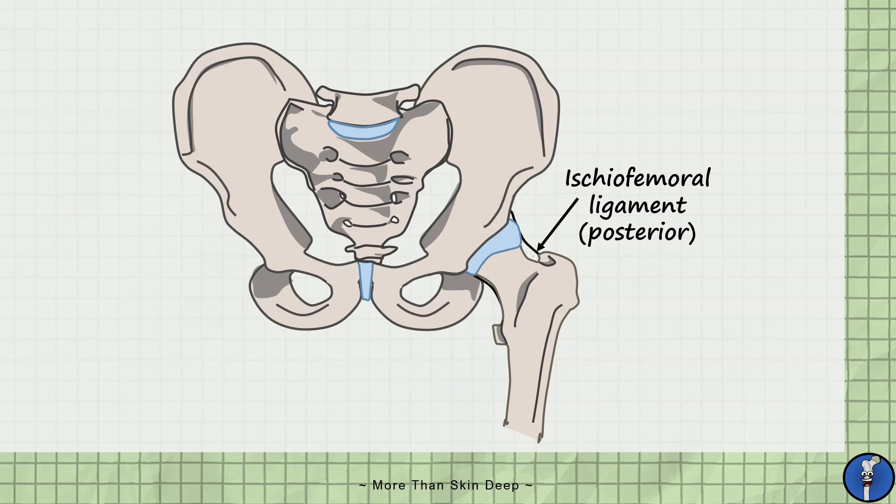Anteriorly, there's the pubofemoral ligament, from the superior pubic rami to the intratrochanteric line, and the iliofemoral ligament, from the iliac spine to the intratrochanteric line.